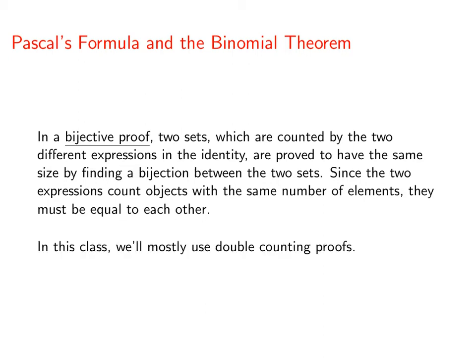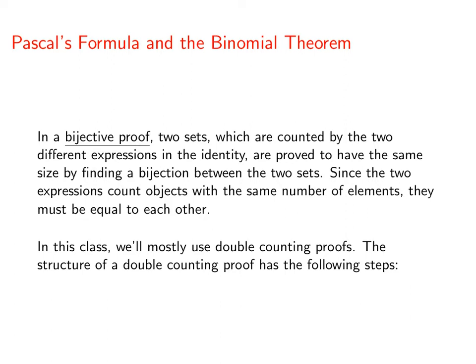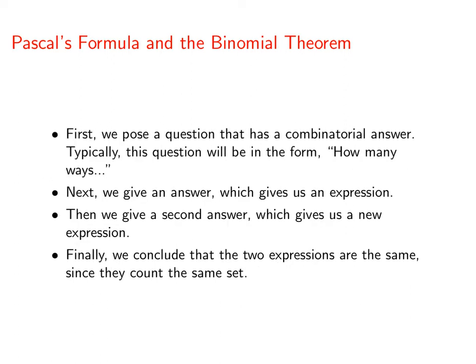As I said before, we're mostly going to see double counting proofs. Let's go over the structure of one. The first thing we do is pose a question that has a combinatorial answer — usually starting with "how many ways" — then we give a first answer, which gives us one expression, and a second answer, which gives us a new expression. We finish by concluding those two expressions are the same because they're counting the same set in a different way.